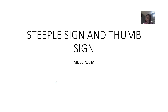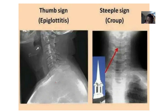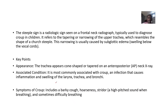There are two signs seen in radiology of the neck: the stipple sign and the thumb sign. I want to discuss them together. Stipple sign is mostly seen in croup, which is inflammation of the trachea — tracheitis. Thumb sign is mostly seen in inflammation of the epiglottis. If you observe the image, you can see where the arrow is pointing, indicating each sign.